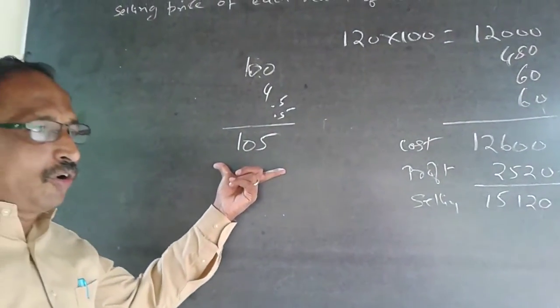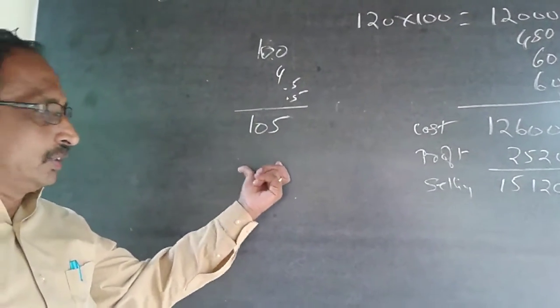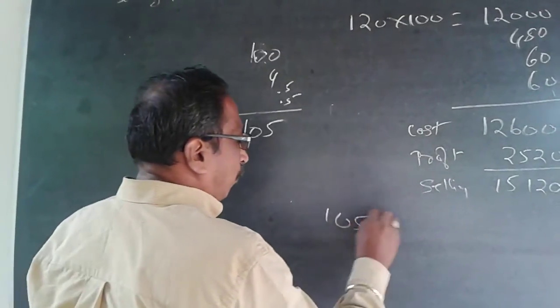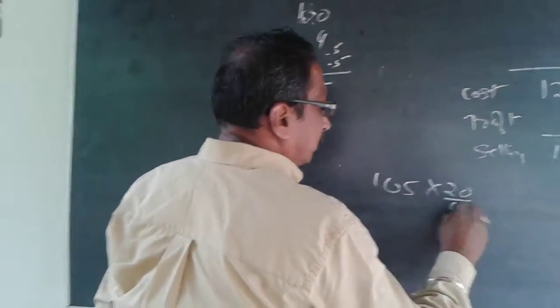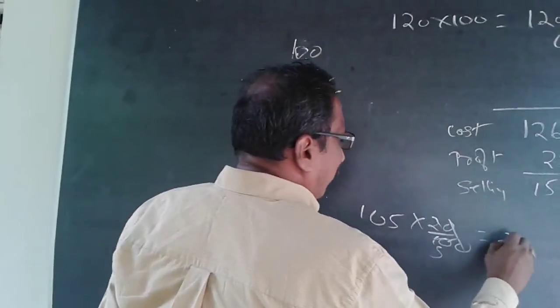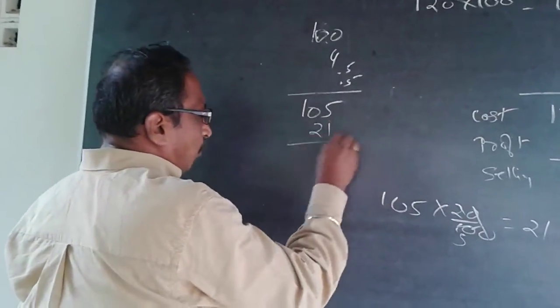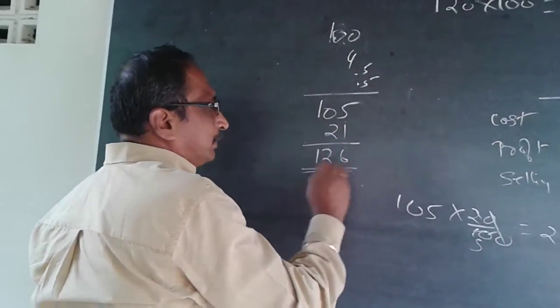So 105 will be total cost. 20% on this, so it will be 105 into 20 by 100. This will get cut, this will be 5, it will be equal to 21. So add this 21 here. 126 per ream is the answer.